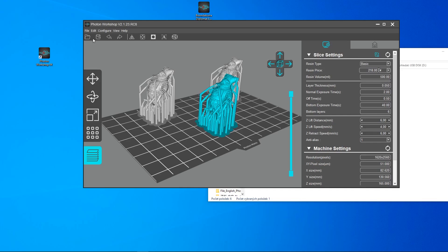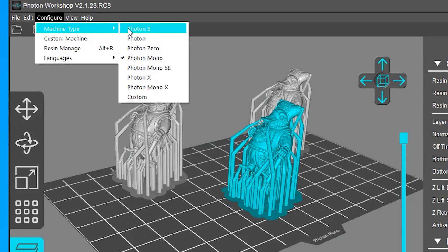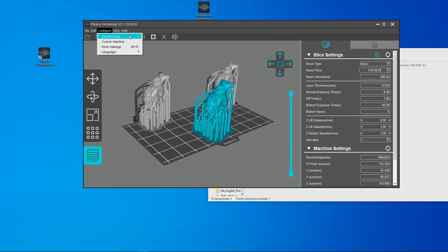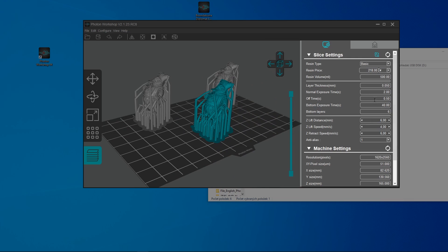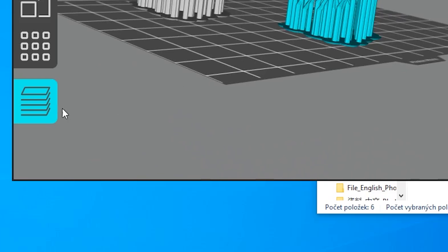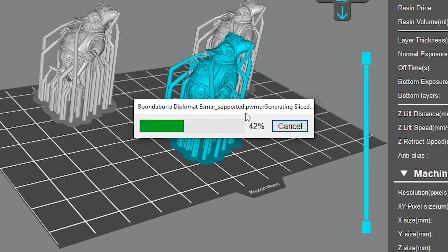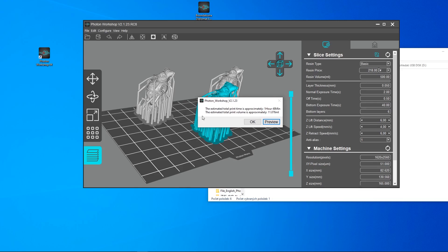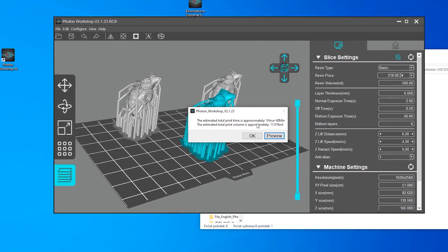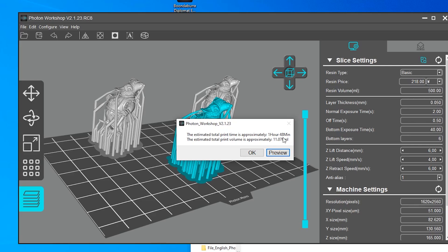Of course you can use this slicer for all of the Photon printers, but I'm going to select Photon Mono, and you can see that the default settings have changed. Then you can simply press this button, and it will export it in the file format that we need. Additionally, you will see how much time and resin it will take. So get it on your memory card, stick it to your printer, and you are ready.